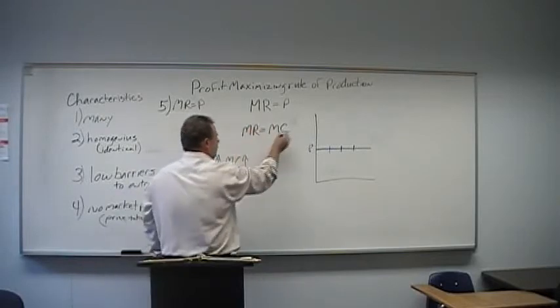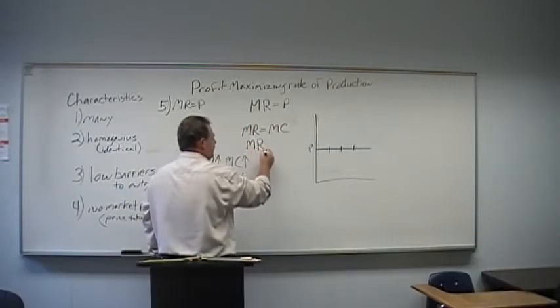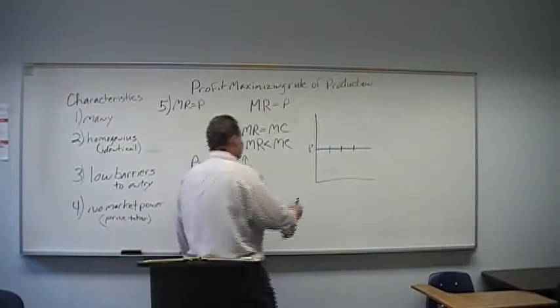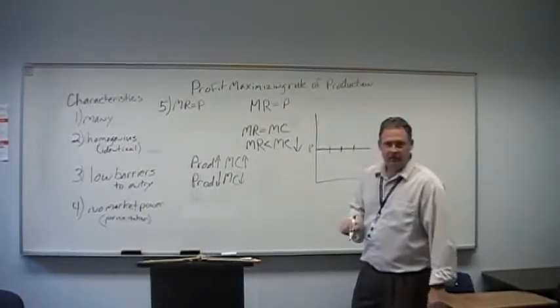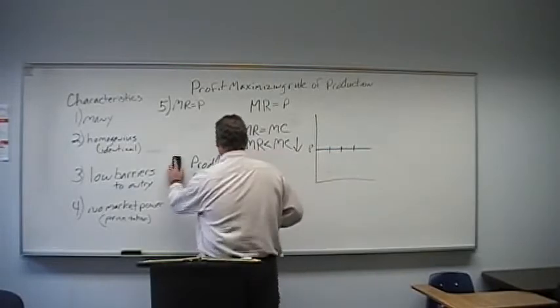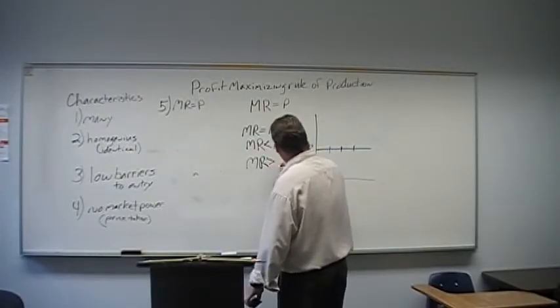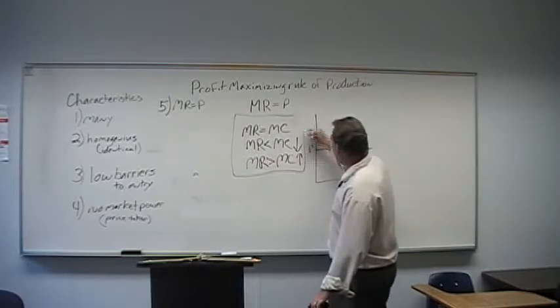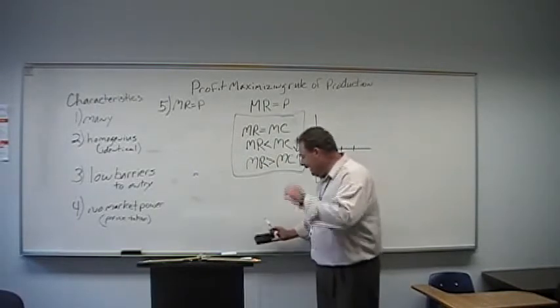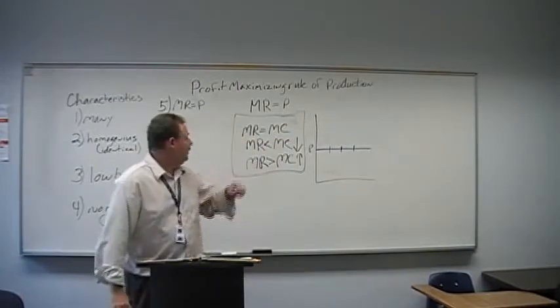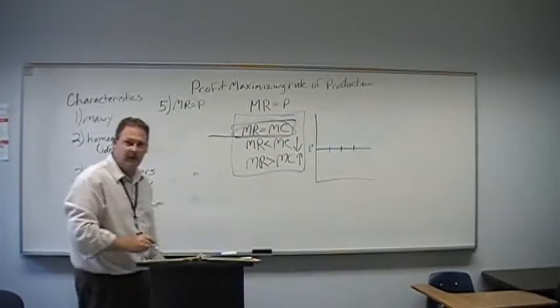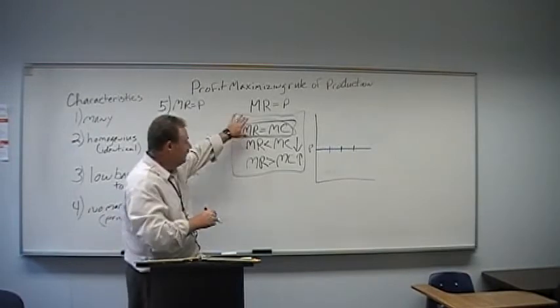So when it comes to this profit maximizing rule of production, this is the ideal. If you get a situation where MR is less than MC, meaning you are getting less than it costs you to produce it, reduce production. If you get a situation where MR is greater than MC, increase production. This is a hard, fast rule. This is one of those like in elasticity that at a glance you should know what they should do. That should always be your goal: produce where MR equals MC. That's where you want to be. If one of these conditions exist, adjust production to get that.